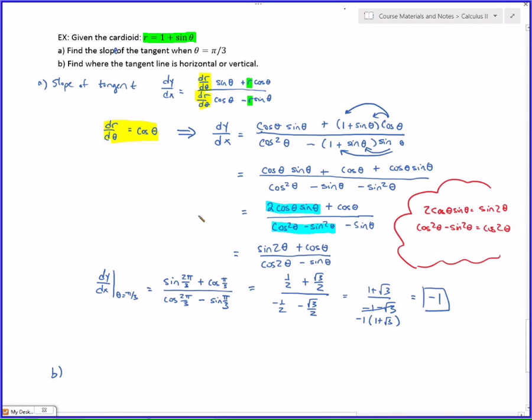So r equals 1 plus sine of theta. We wanted to know the slope of the tangent when theta was pi over 3. We had graphed it in Maple, and if you go back and looked at pi over 3, which is like 60 degrees, the slope is going to be negative 1.